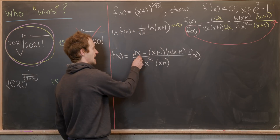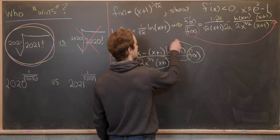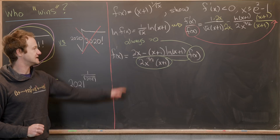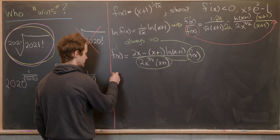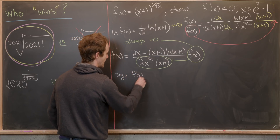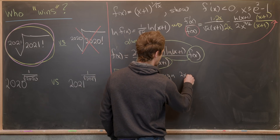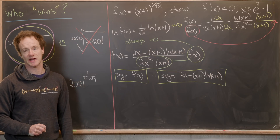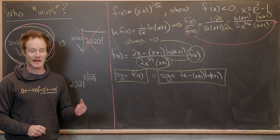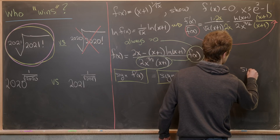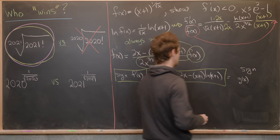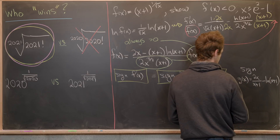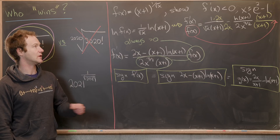An important observation: the denominator and f of x are always bigger than zero, so the sign of f prime equals the sign of the numerator: 2x minus (x plus one) times natural log of x plus one. Dividing by x plus one does not change the sign, so we introduce g of x equals 2x over x plus one minus natural log of x plus one. If we can show g of x is always negative, we're done — that achieves our intermediate goal.